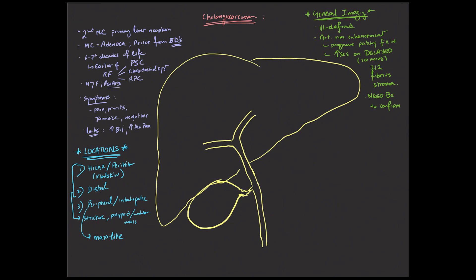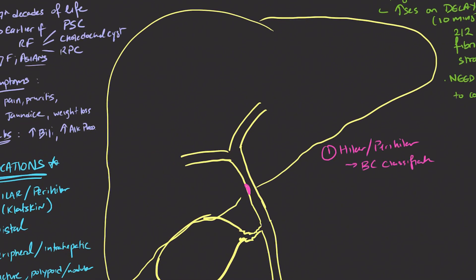First one being the hilar-perihilar location, sometimes referred to as the Klatskin tumor. And it's important to remember that this is further classified according to the Bismuth-Corlette classification. And so whether or not you use these in your reports is really up to you, but it's important to at least know of it in order to be able to describe where these lesions occur.